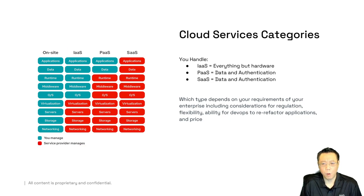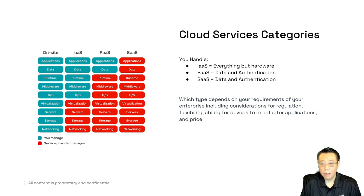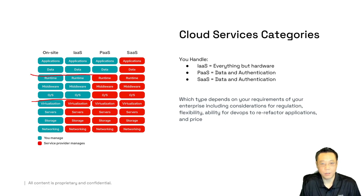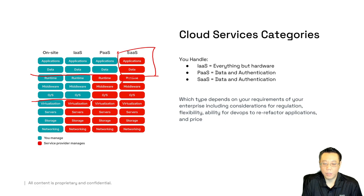Workloads are more than just one application — a workload can mean multiple applications. For example, human resources might have an insurance application, a benefits application, and a process intake application for new candidates. Those are separate applications but one workload for HR. IaaS requires you to manage everything except the underlying virtualization hardware. PaaS provides the OS, runtime, and everything needed to run your application, though you still provide the data. SaaS is fully cloud-based software — like mobile applications that are transparent to you as a user.